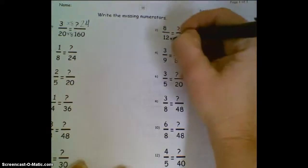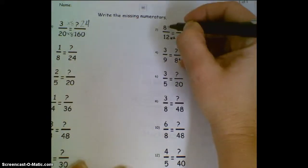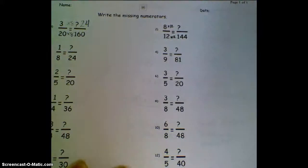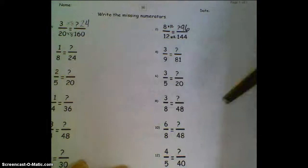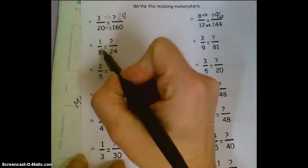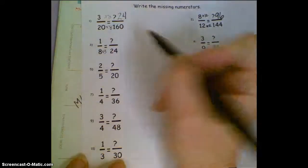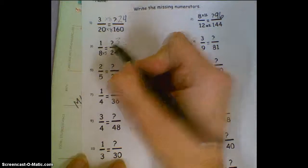12 times 12 is 144, so 8 times 12 equals 96 for that one. And then down here, 8 times 3 equals 24, so 1 times 3 would be 3.